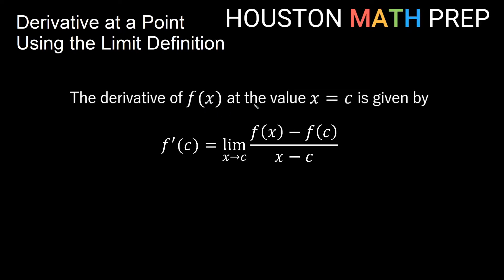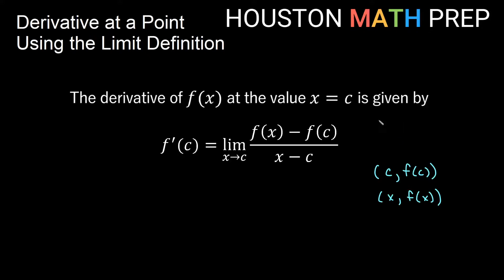The derivative of a function f(x) at some x value c is given by: f prime of c equals the limit as x approaches c of f(x) minus f(c) over x minus c. The idea is that at some particular x value c you have a point c, f(c), and some other general point x, f(x). As we move x, f(x) closer and closer to c, f(c), the slope of our secant line becomes closer and closer to the slope of the tangent line. That's what we're doing when we find the derivative at an x value — finding the slope of the tangent line there.